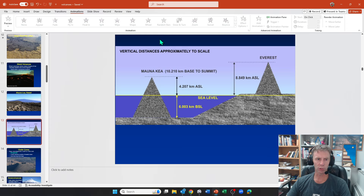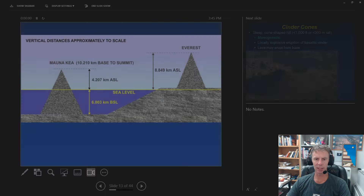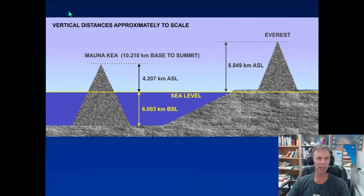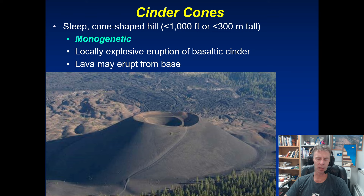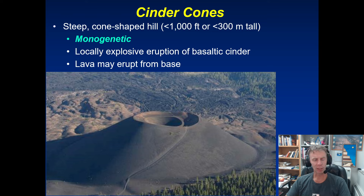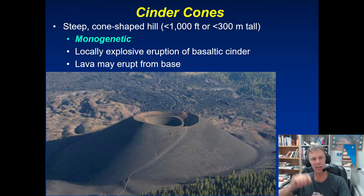Switching over to the next volcano type — still in the nice category — we have one more nice volcano to go: the cinder cone. Imagine that same low viscosity basaltic lava erupting, but with a little more gas content in the magma, or maybe it's still basalt but just a tiny bit stickier. So it's trapped a little more gas, it's a little bit more gas-rich, and it's a tiny bit more explosive — locally explosive. Now we are throwing little clots of lava up into the air.